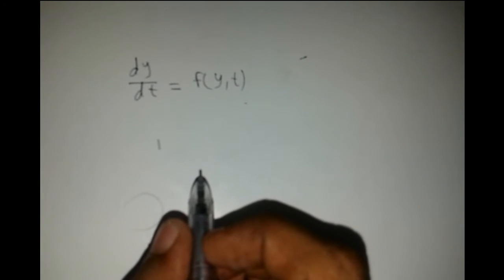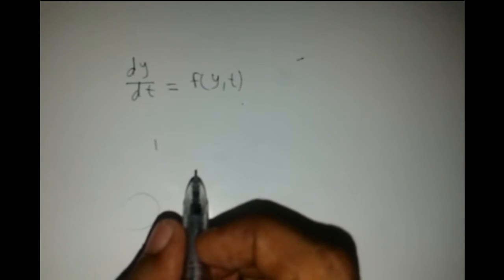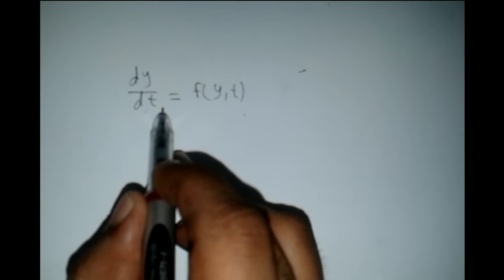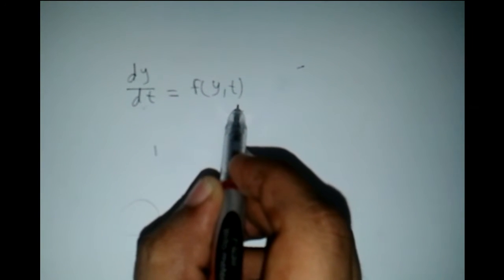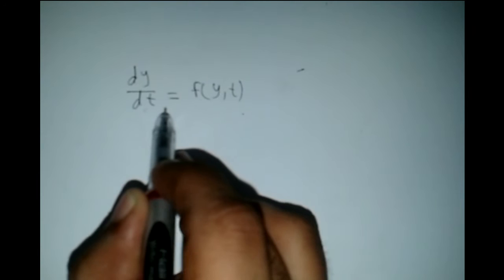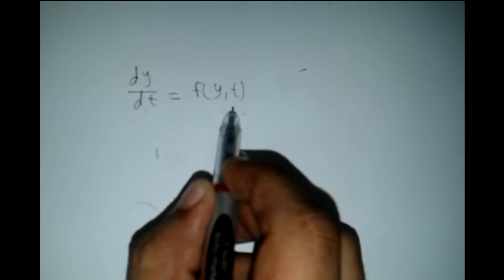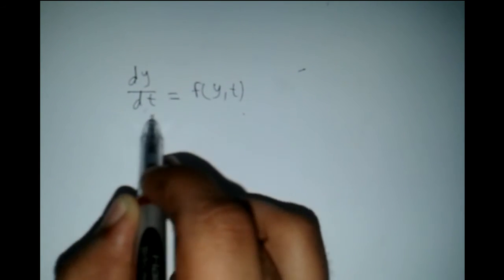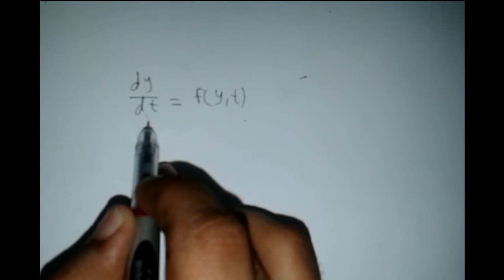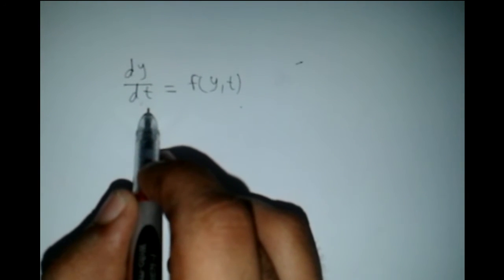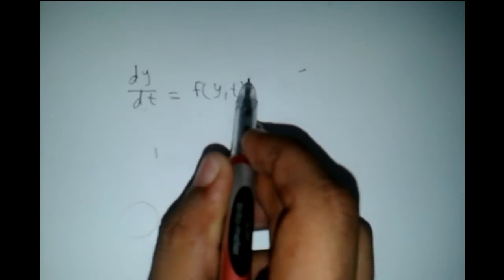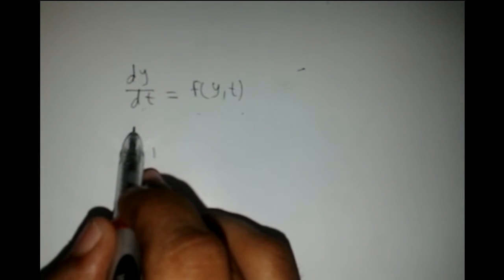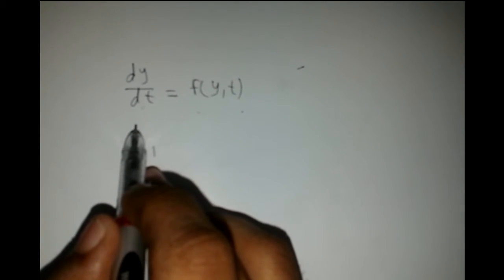Here I want to explain the numerical method, Euler's method, to solve the differential equation. The differential equation is dy/dt equals a function of y of t. To solve this, we can either use analytical methods or numerical methods. This is how a computer calculates the solution using numerical methods. We'll see how to implement the solution using Euler's method in Python.